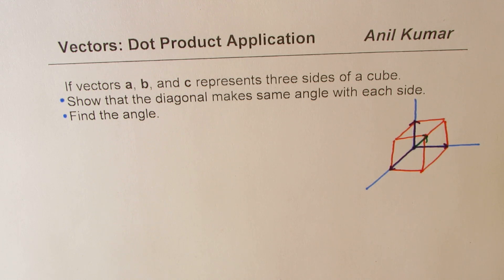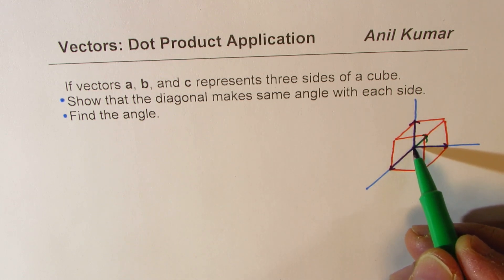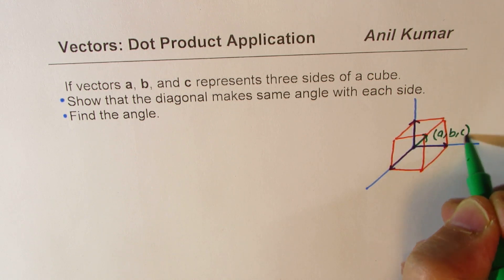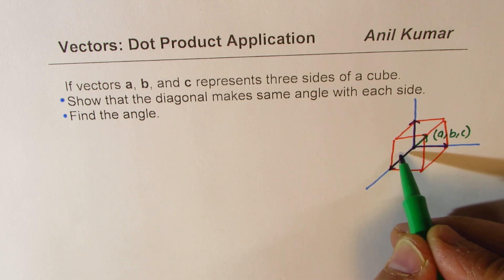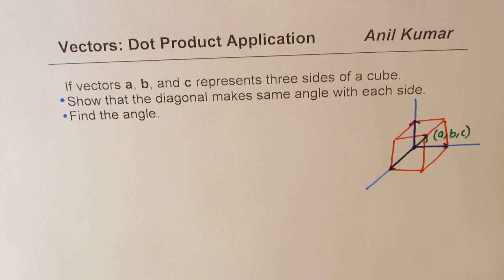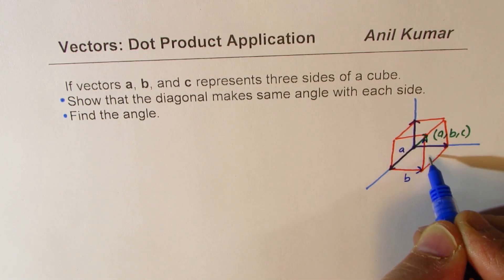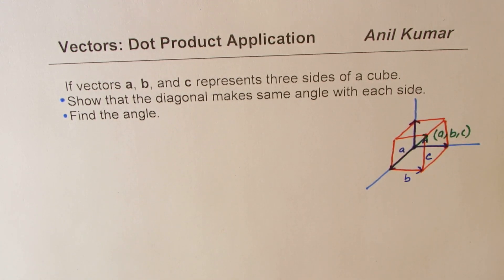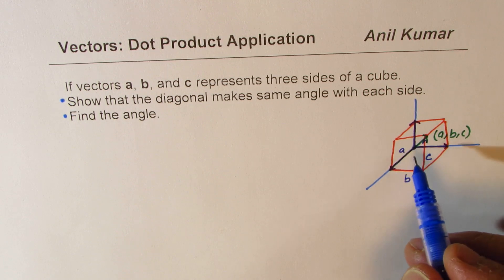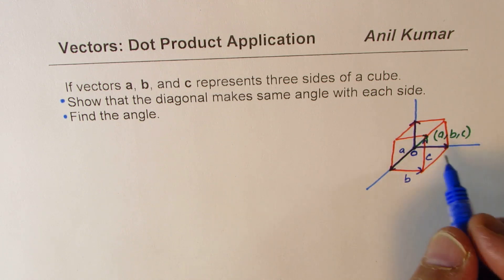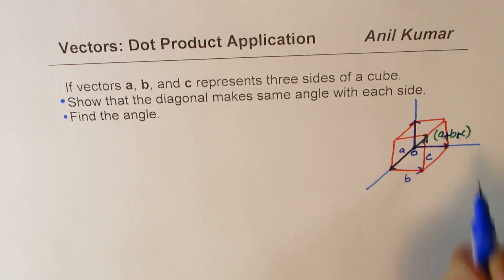Now in this case the diagonal will be a, b, and c. This position here represents a, b, c. So let me rewrite — this is our vector a, this is our vector b, and that is our vector c. So these are the three sides of the cube, and the diagonal is from origin O to this vertex, which is a, b, c. So we should write this as a plus b plus c.